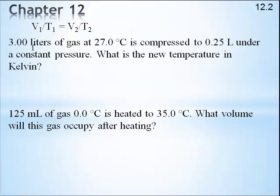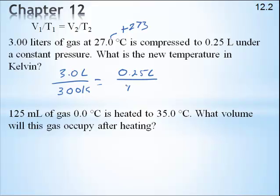Here we go. I've got three liters of gas at 27 degrees Celsius and we're going to compress it. So, my first volume is 3.0 liters. And my first temperature is 27 degrees Celsius plus 273. So, that gives me 300 K. V2 is 0.25 liters and we're figuring out T2.